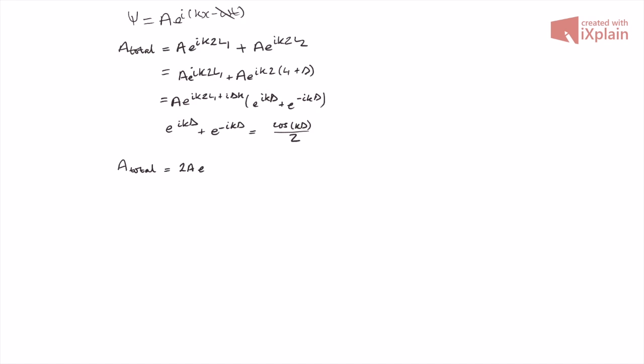We can write that the interference at the detector screen is equal to the following. Now, since the intensity of a wave is proportional to the amplitude squared, and e to the power of anything is 1, we can say that the intensity of the wave at the detector screen is proportional to 4 amplitude squared cos squared of k delta. Therefore, it's proportional to cos squared of k delta. Note that we've removed the constants from the maths.